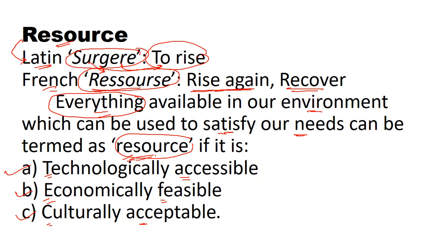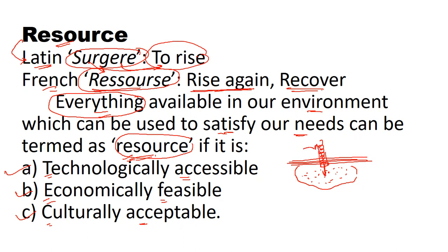For example, say there is a sedimentary rock in the earth with huge deposits of petroleum. To access this petroleum, I should have proper technology — a drill to make a hole in the sedimentary rock, extract it to the surface, and then use it. If I lack this technology, then this deposit of petroleum cannot be termed as a resource. Unless we have proper technology to extract it, it cannot be called a resource.